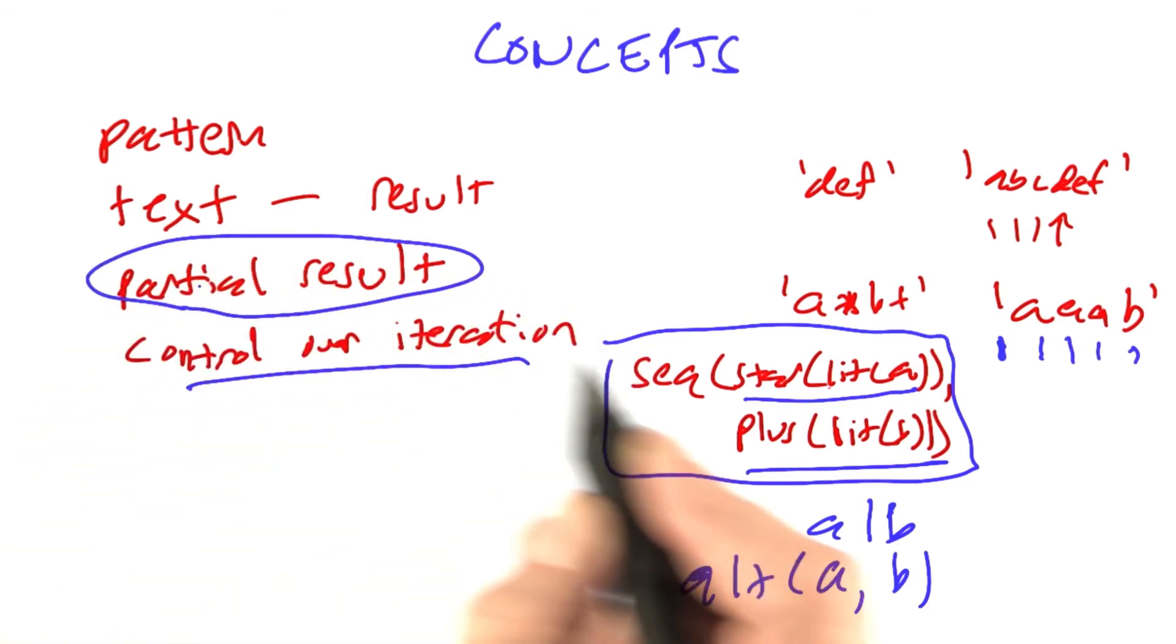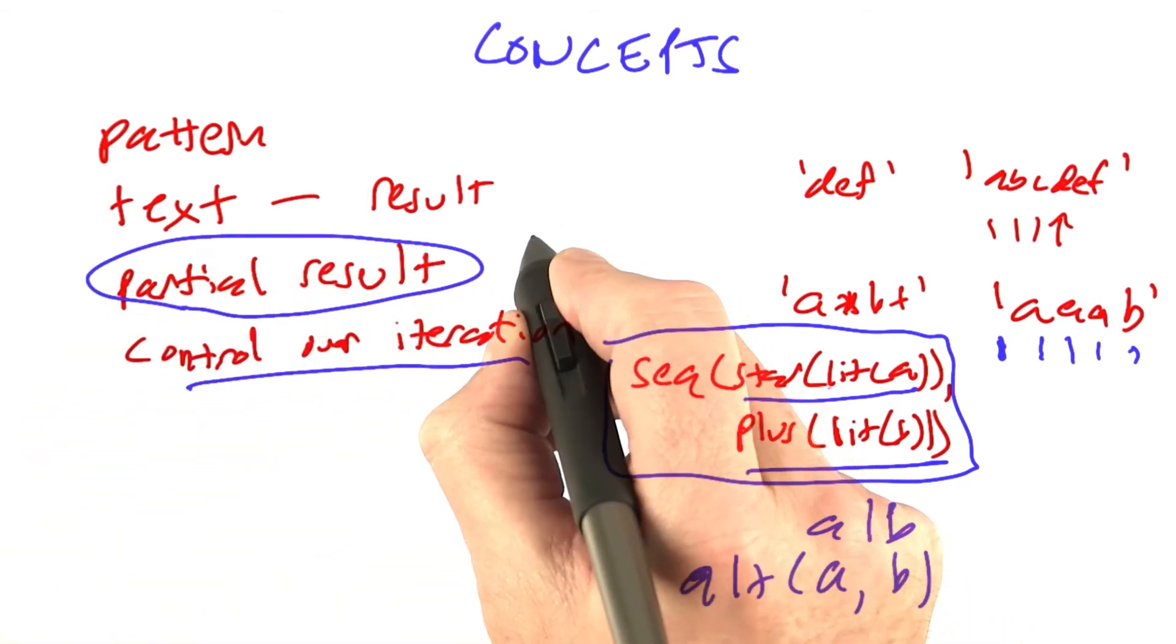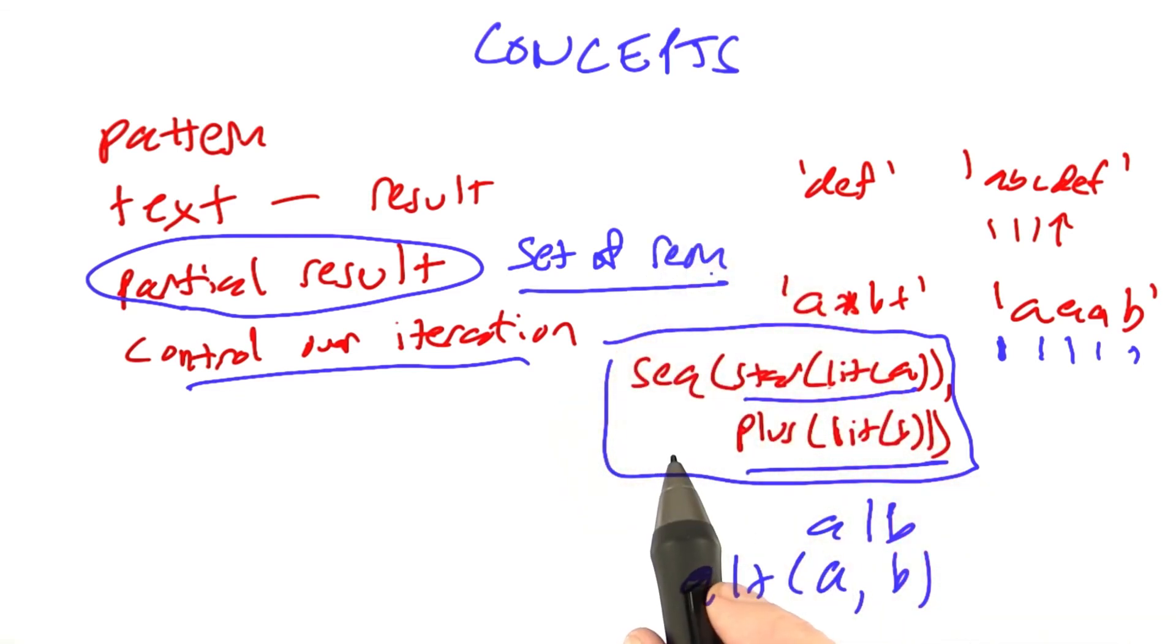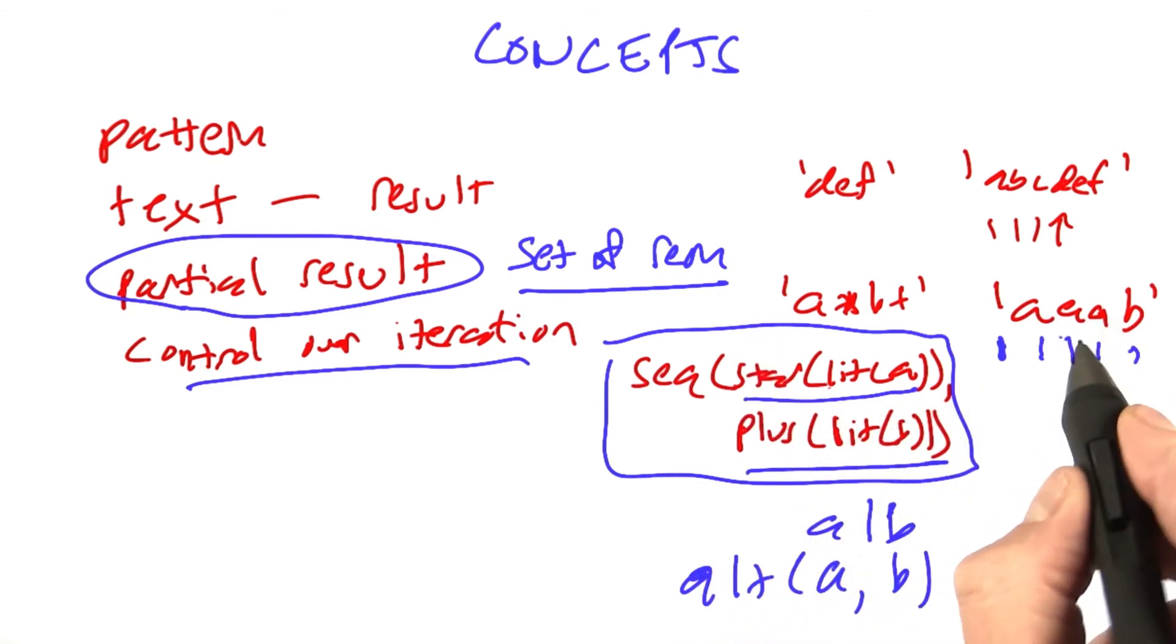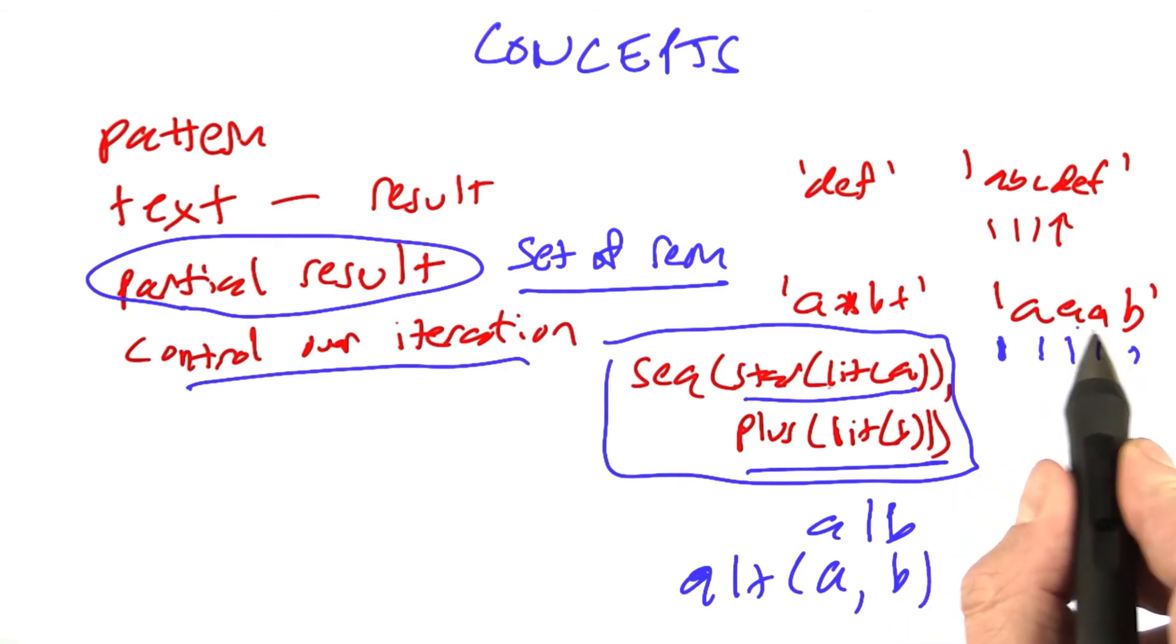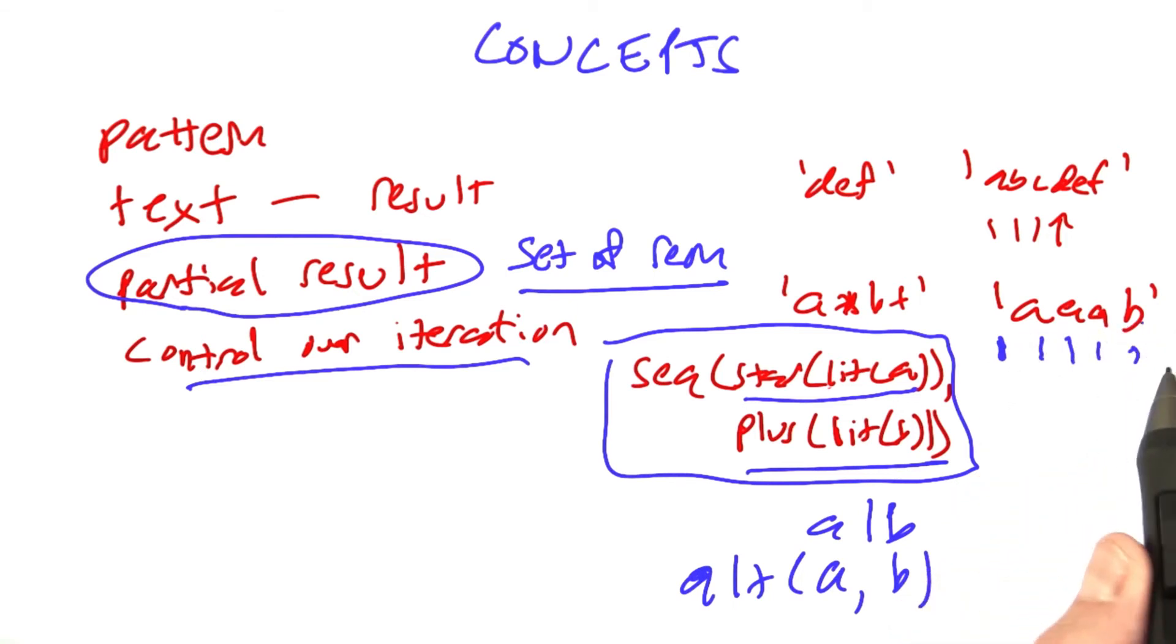But if we decide to represent these partial results as a set of remainders of the text, then everything falls into place. What do I mean by a remainder? I mean everything else after the match. So if we match a literal a, the remainder after we match 0 characters of this string would be a, a, a, three a's followed by a b. The remainder after we match one a would be two a's followed by a b, and so on.